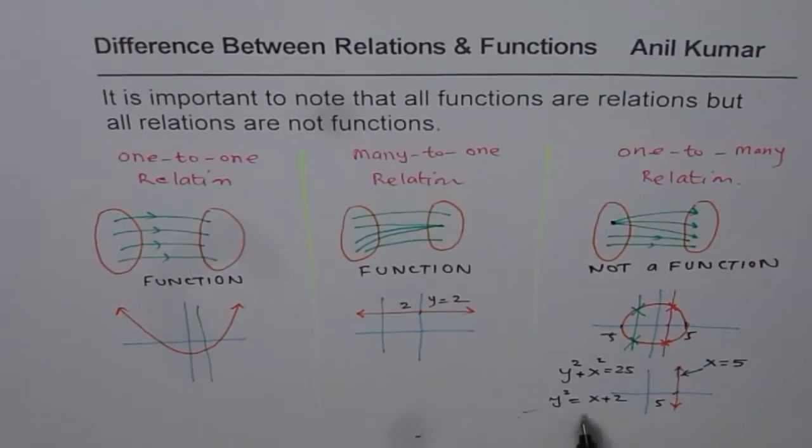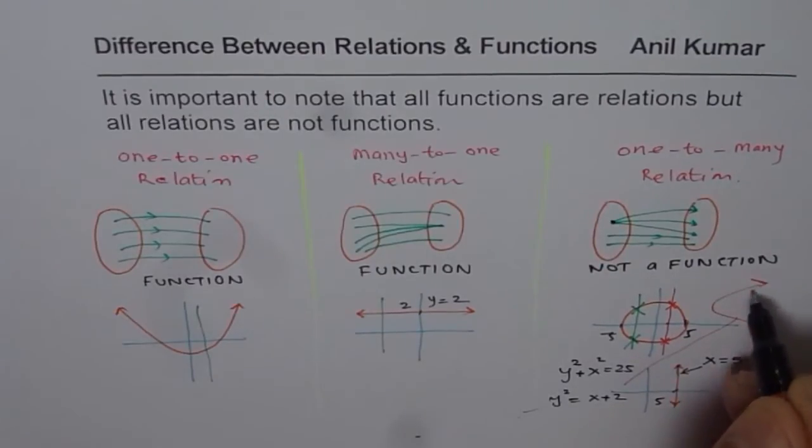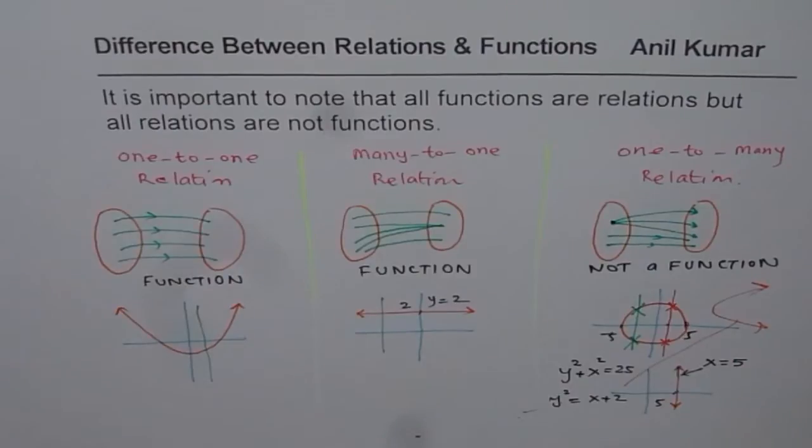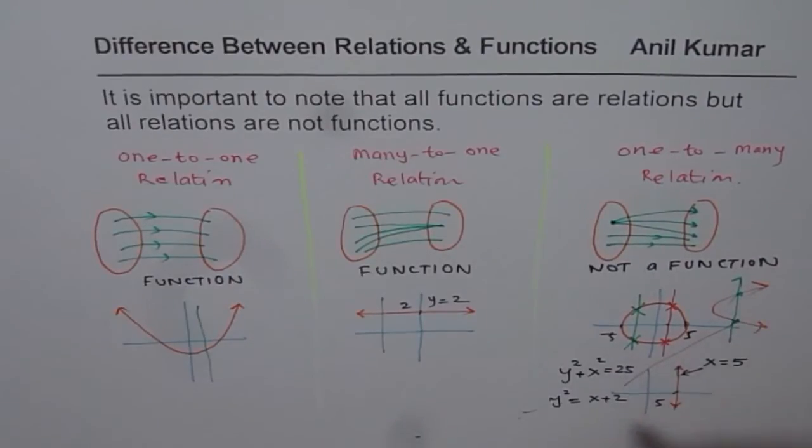The graph of this one will be kind of, when you square root it, it will be kind of like this. Do you see that? That graph will fail the vertical line test. Those are the kind of equations which will result into relations not being functions. Be careful about it.